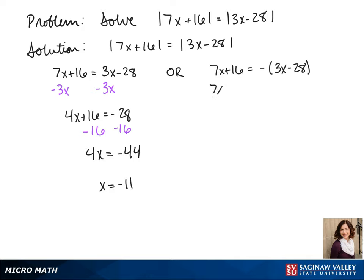On our other side, we distribute the negative on the right side, so we get 7x plus 16 equals negative 3x plus 28. We add 3x to both sides, so we get 10x plus 16 equals 28. We subtract 16 from both sides, and we get 10x equals 12.